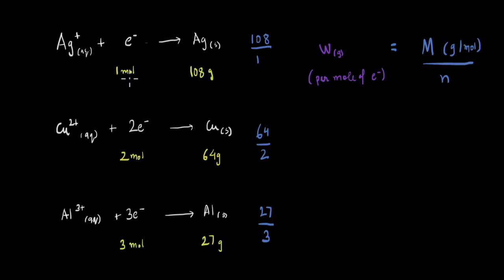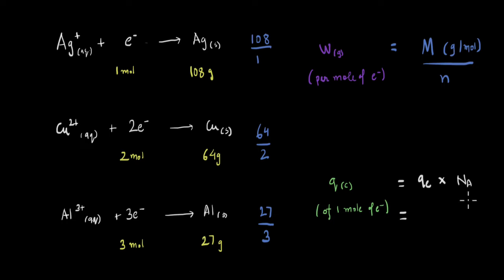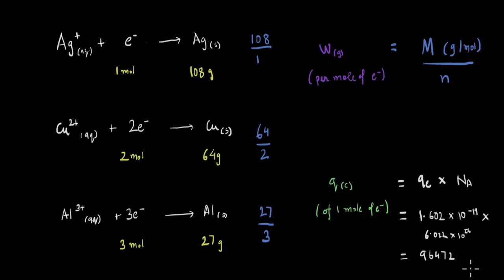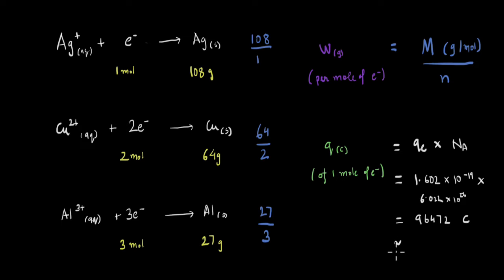Now let's find the charge of 1 mole of electrons. The charge of 1 mole of electrons in coulombs equals the charge of 1 electron times Avogadro's number: 1.602 × 10⁻¹⁹ coulombs × 6.022 × 10²³. This comes out to approximately 96,472 coulombs, which we approximate as 96,500 coulombs. So we now have the weight deposited per mole of electrons, and the charge of 1 mole of electrons.